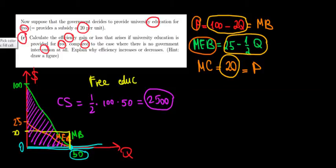What else do we have? We have external benefits. The external benefits is going to be the area underneath the marginal external benefit. This area over here, this triangle is going to be the external benefits.